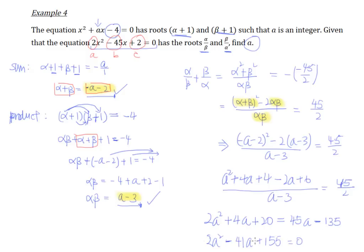And plus 155 constant equals to 0. Because this -135, we bring over, it becomes positive 135. So 135 + 20 gives us 155. So this is a quadratic equation that we should be able to solve.